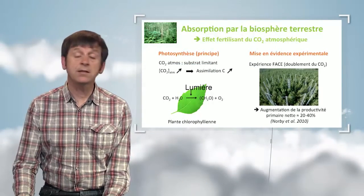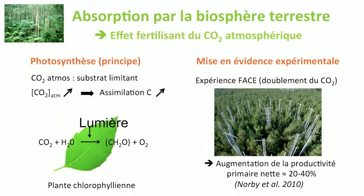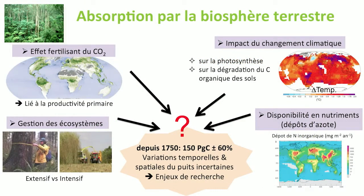For the biosphere, a similar phenomenon is called the fertilizing effect of atmospheric CO2. Taking the principle of photosynthesis — plants use CO2 to fixate carbon, and atmospheric CO2 is a substrate present in limited quantities. Increasing CO2 in the atmosphere allows greater carbon assimilation. Tests conducted on different ecosystems through FACE experiments, where CO2 concentration was doubled versus control plots, showed a net increase in primary productivity of ecosystems between 20 and 40 percent depending on the ecosystem, with saturation occurring over time.